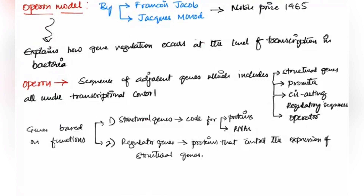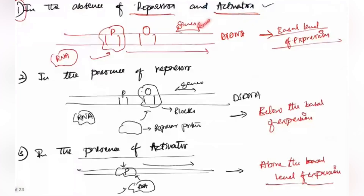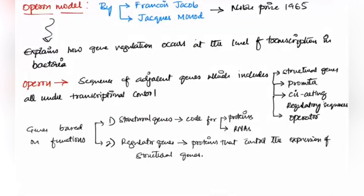To explain all of this in a better way, the operon model was brought forward by François Jacob and Jacques Monod, for which they received a Nobel Prize in 1965. The operon model explains how gene regulation occurs at the level of transcription in bacteria.